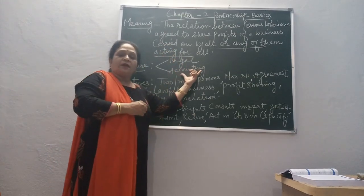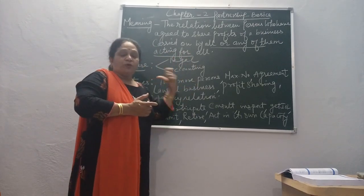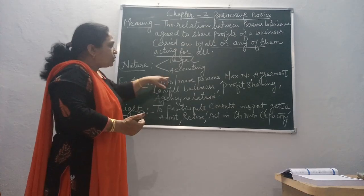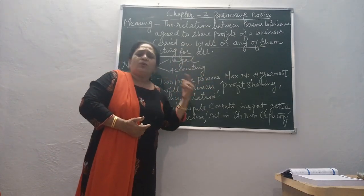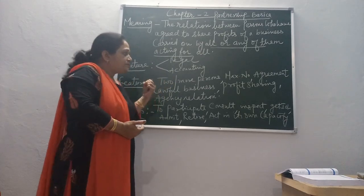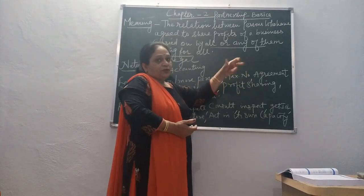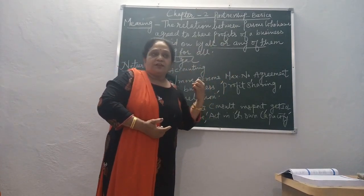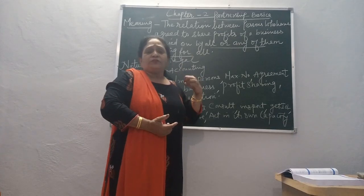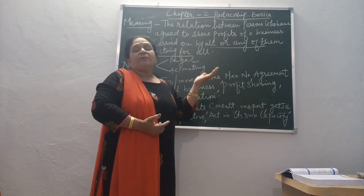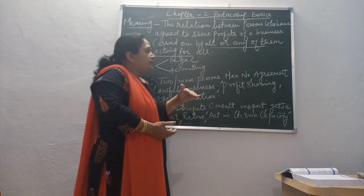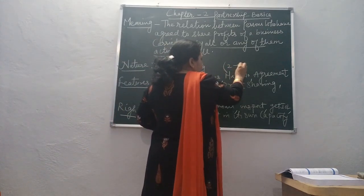We are maintaining accounts from the point of view of the firm as well as from the point of view of the partners. The features of partnership include two or more persons — a single person cannot constitute a partnership, at least two people are required. The maximum number is 50 as per the Indian Companies Act 2013, so the minimum is 2 and the maximum is 50.